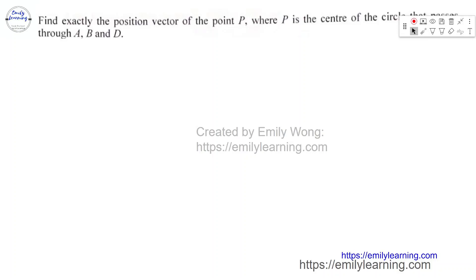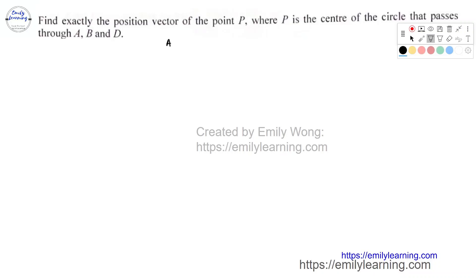Now part D: find the position vector of point P, the center of the circle passing through A, B, and D. To solve this, we use properties of circles and isosceles triangles. From the previous part we know |AD| = |BD|, so triangle ADB is isosceles. If we draw a perpendicular line from D to AB, this line is the perpendicular bisector of AB and divides AB into two equal parts.